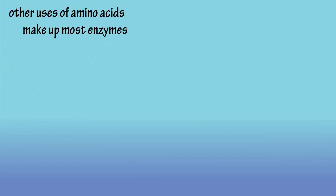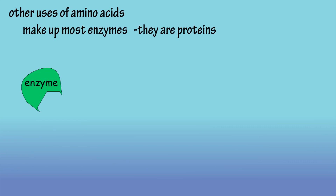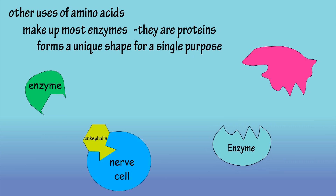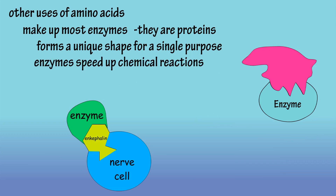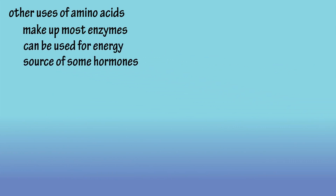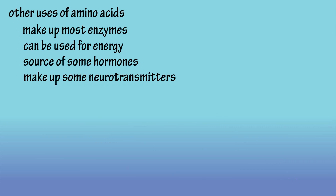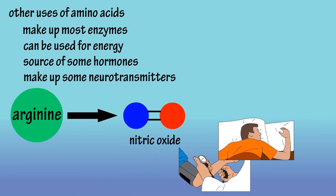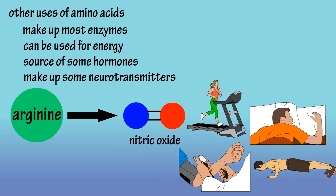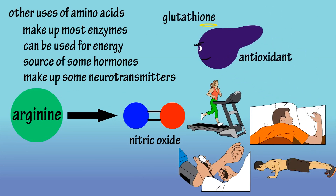Amino acids also make up most enzymes. These enzymes are proteins, so they are made by linking amino acids together in a specific and unique order. This chain of amino acids then forms a unique shape that allows the enzyme to serve a single specific purpose. Enzymes function as catalysts, which means they speed up the rate at which metabolic processes and reactions occur. Amino acids can also be metabolized for energy. Some hormones, like epinephrine — also known as adrenaline — are amino acid derived. Some neurotransmitters, like serotonin, are derived from amino acids. The amino acid arginine is a precursor of nitric oxide, which helps regulate blood pressure, improves sleep quality, and increases endurance and strength. Glutathione, which is a powerful antioxidant, is also formed from amino acids.